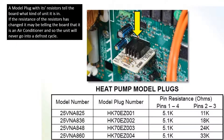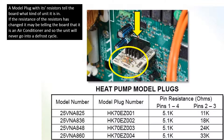Many manufacturers use a model plug with resistors to tell the board what kind of unit it is operating. If the resistance of these resistors has changed, it may tell the board that it is an air conditioner, so the unit will never go into a defrost cycle. A few years ago, a technician had changed the board, changed the defrost sensor, and changed everything he knew to do, yet the unit would still not defrost. We found that the resistors on the model plug were out of range, telling the board it was an air conditioner rather than a heat pump. Once we installed the proper resistors on the model plug, the unit went immediately into defrost.